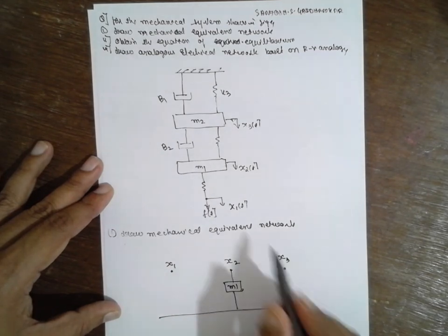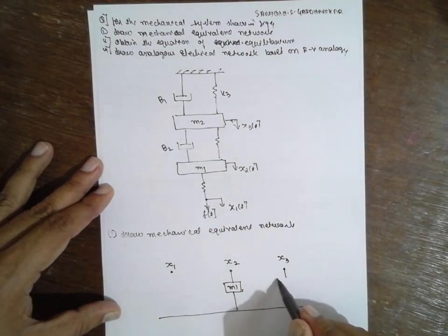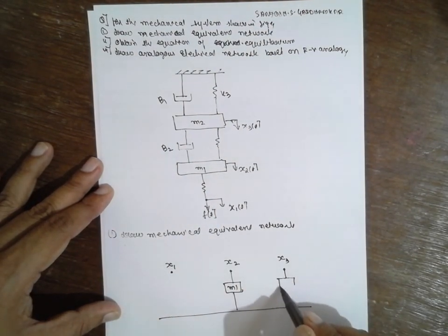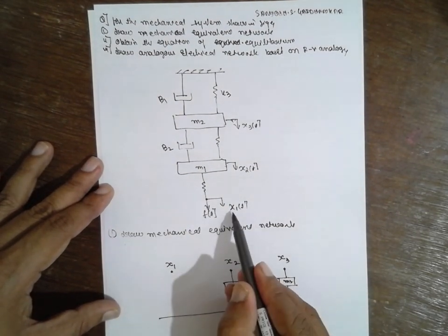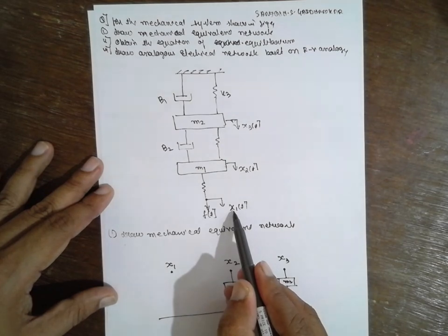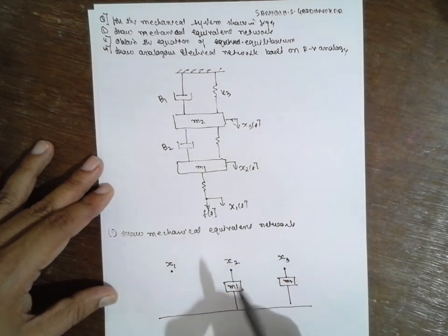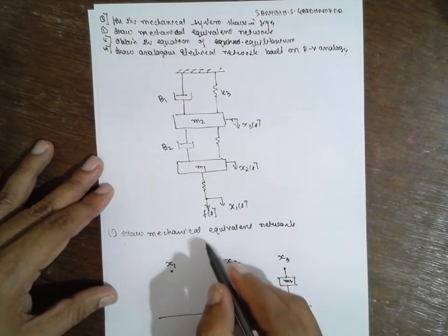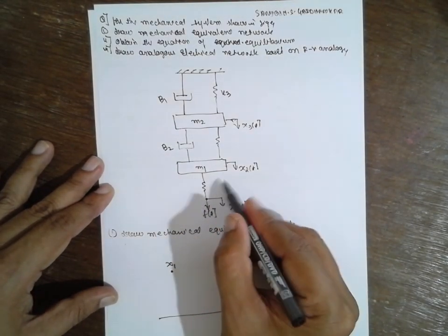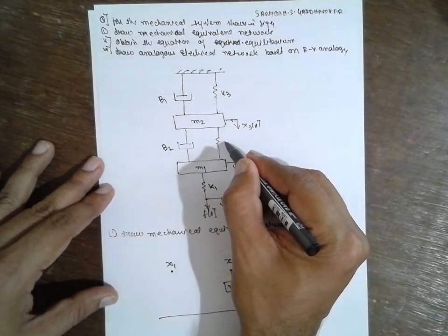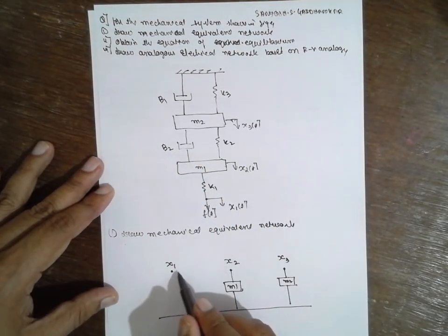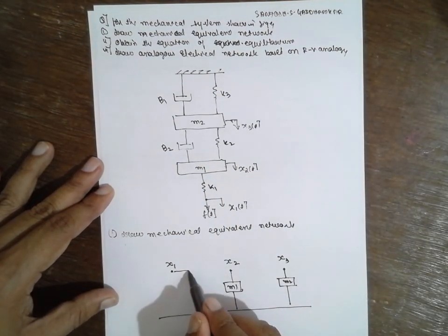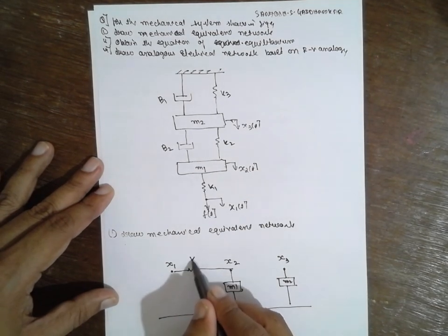M3 connected to M2 is connected to node 3, connected to node 1. In between node 1 and node 2, the spring K1 is provided.